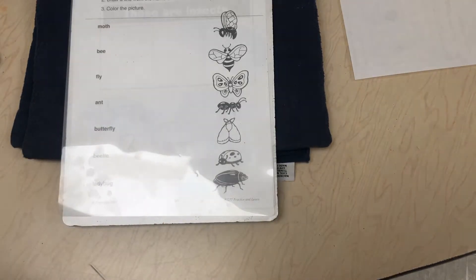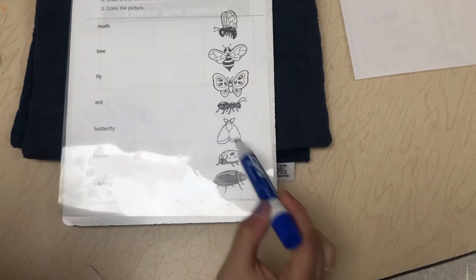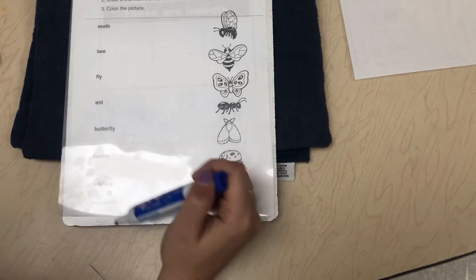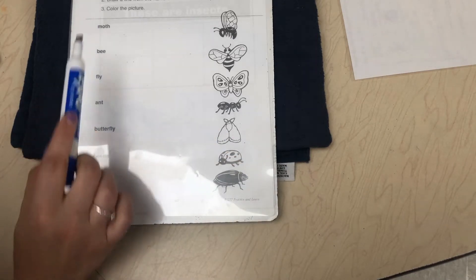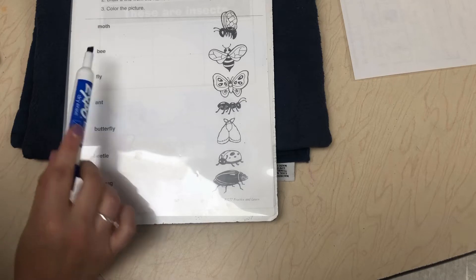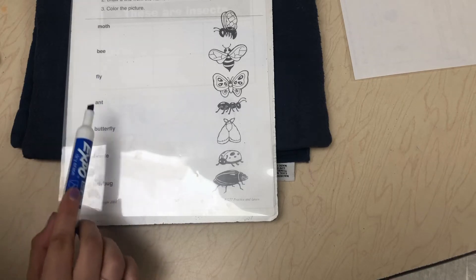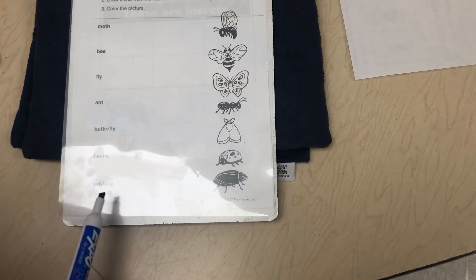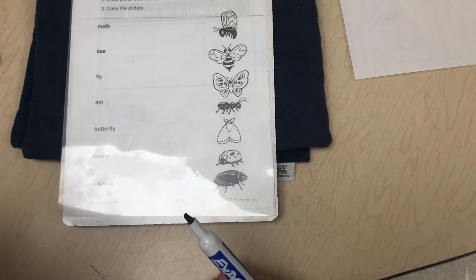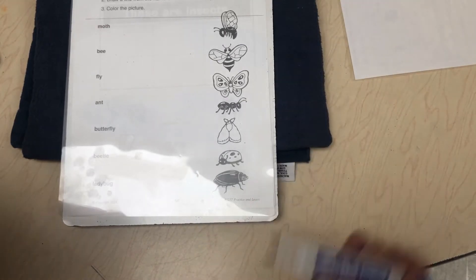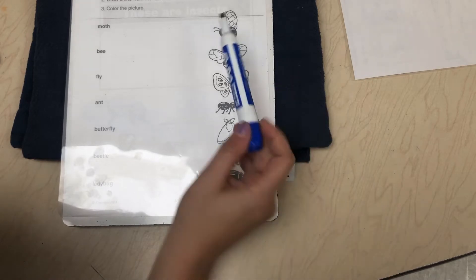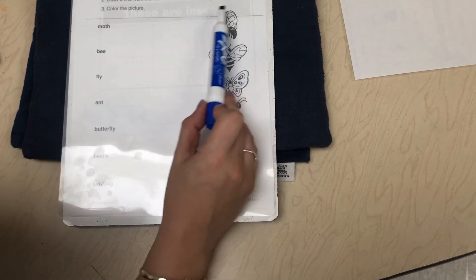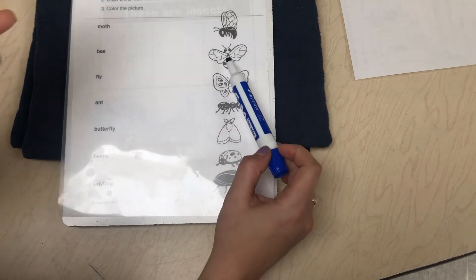Okay, so we are going to start by looking at our words over here and also looking at our pictures. So we have a really good visual and we also have our words. Our first one is moth, next is bee, fly, ant, butterfly, beetle, and ladybug. So what we want to do is look at the physical attributes of each bug. In this first one you may not be able to tell what that is, so we're going to skip that and move on to this one.